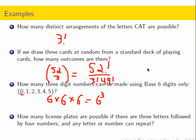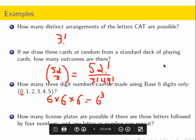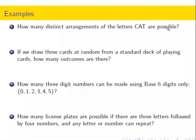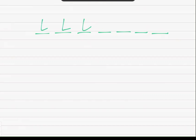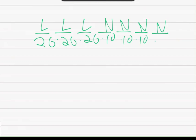How many license plates are possible if there are three letters followed by four numbers, and any letter or number can repeat? This is a Cartesian product with seven slots. We have 26 options for each of the three letter slots and 10 options for each of the four number slots. So the total is 26 × 26 × 26 × 10 × 10 × 10 × 10, which is 26 cubed times 10 to the fourth.